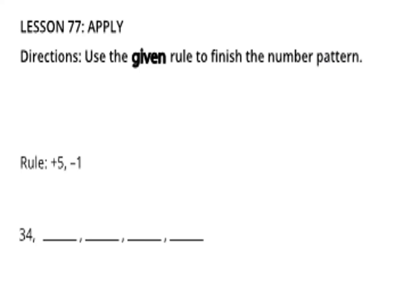Lesson number 77 — Apply: use a given rule to finish the number pattern. The rule is plus five, minus one — a wavy pattern. We start with thirty-four. Thirty-four plus five equals thirty-nine. Thirty-nine minus one equals thirty-eight. Thirty-eight plus five equals forty-three. Forty-three minus one equals forty-two.